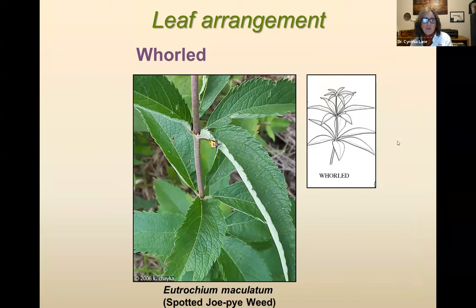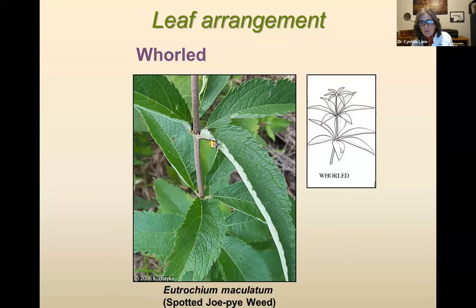Another kind of leaf arrangement is whorled, seen on a few different types of plants. Spotted Joe-pye weed is a good example — basically you've got your stem and three to five, seven, or sometimes more leaves coming out right at the same spot. That's a whorl leaf arrangement — one whorl here, another whorl there, and so on.